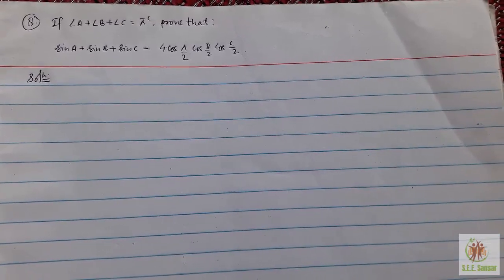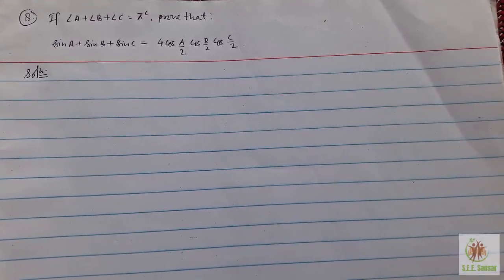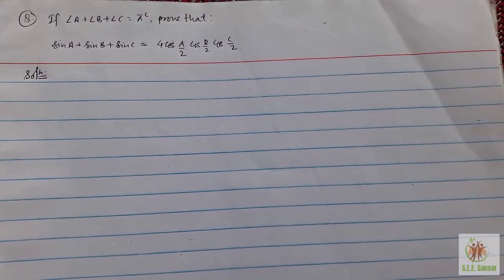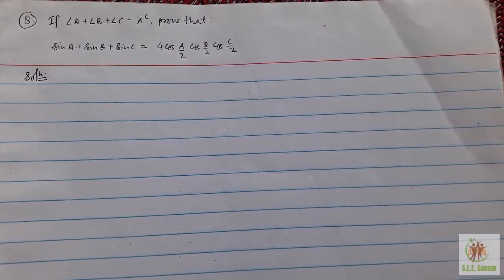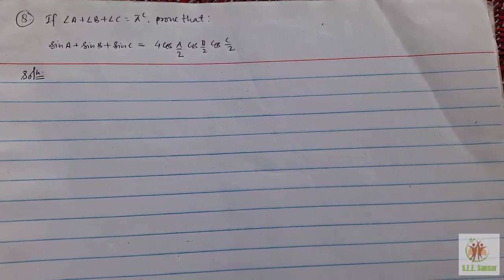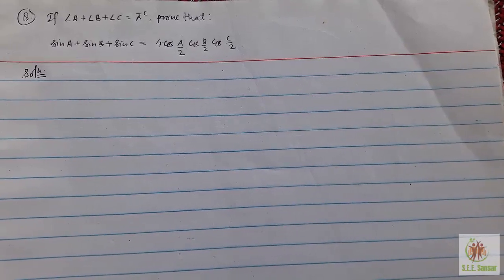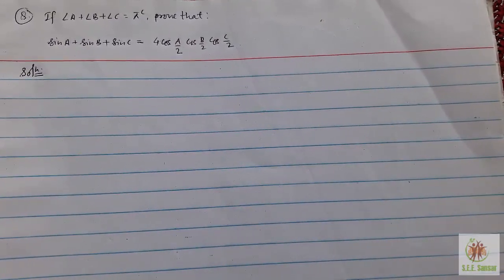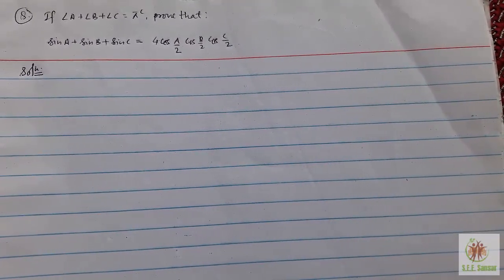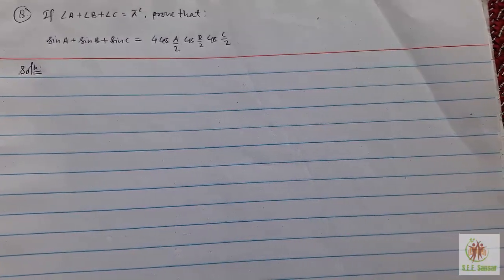So, here is the conditional problem of trigonometry from the Athens objective mathematics. Now, we will talk on the general method of solving these conditional identities questions.